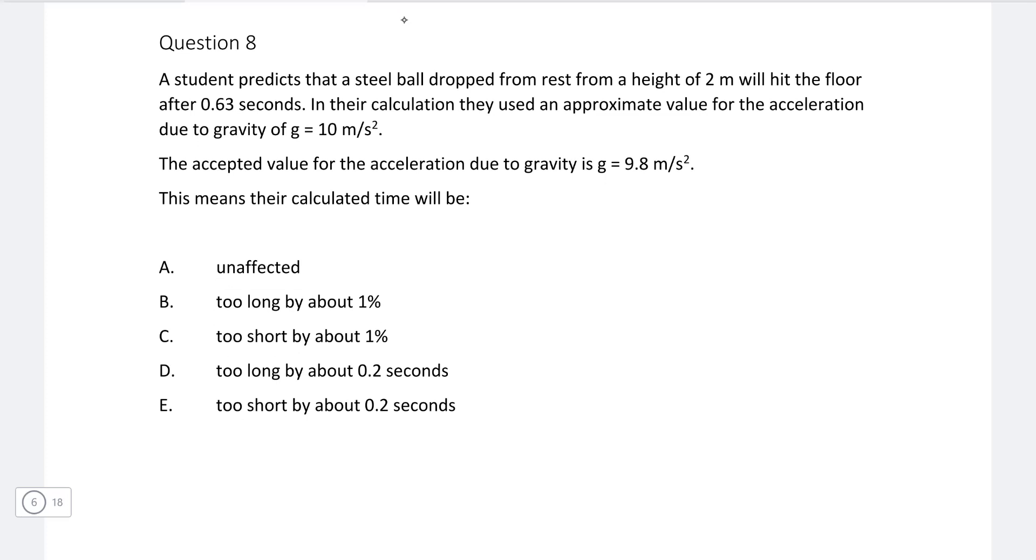Well, if their acceleration that they've chosen is larger, this means that the time will be too short. So the correct answer will either be C or E. Now, too short by around 0.2 seconds—this is really significant because our answer is 0.63. So we can immediately tell that this will be too short by around one percent. So the correct answer will be C.